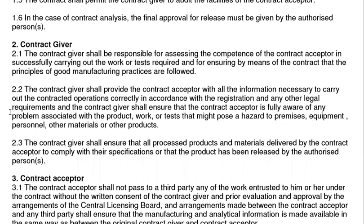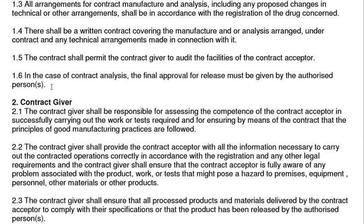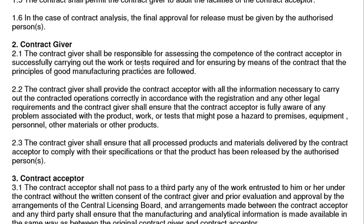The contract giver shall be responsible for assessing the competence of the contract acceptor in successfully carrying out the work or tests required, ensuring that the principles of Good Manufacturing Practices are followed. The contract giver shall provide the contract acceptor with all the information necessary to carry out the contract operations correctly in accordance with registration requirements.